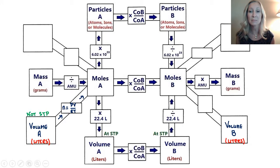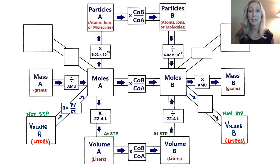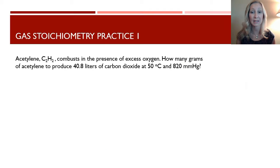If you're doing the reverse — given moles and needing to find volume — volume of B is also measured in liters and is not at STP. Rearranging the ideal gas law to solve for volume gives us V equals NRT over P. We need a temperature, a pressure, and a number of moles to solve for the volume of a non-STP gas.